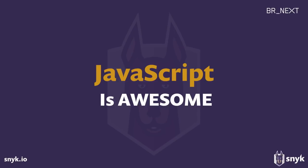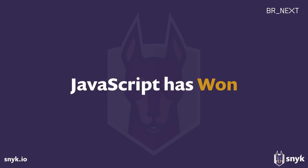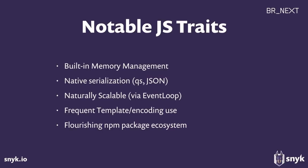Jumping into it, we all know that JavaScript is awesome, right? We all love it, and we like to talk about how JavaScript has won and it's the most popular language, growing faster than anything else. There are a lot of reasons for it - core JavaScript traits including built-in memory management, native serialization with JSON, and the fact that it's naturally scalable. These great capabilities help us be productive and run faster, and they are indeed parts of the reason JavaScript is so successful.